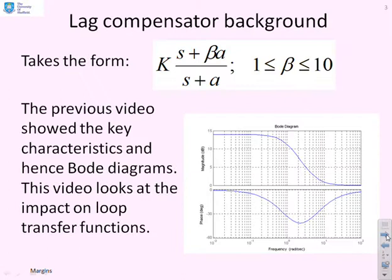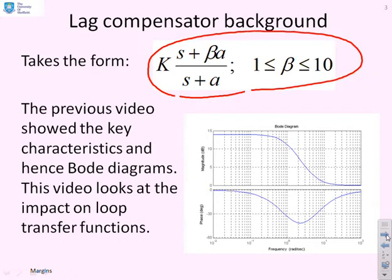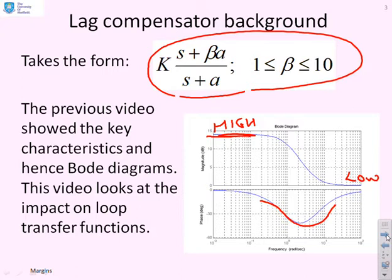Just a reminder of what was covered in the previous video: a lag compensator is defined as k times (s + beta·A) over (s + A), where beta is between 1 and 10. The key characteristics are high gain at low frequencies and low gain at high frequencies, with a characteristic phase dip around the corner frequencies. Ultimately, it's this ratio of high to low gain that is the key thing we're going to use in design.